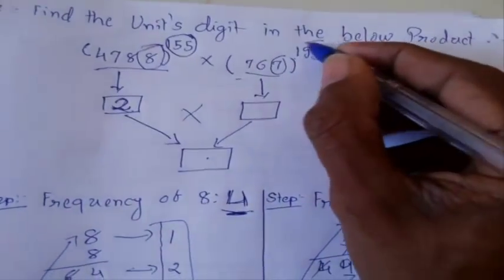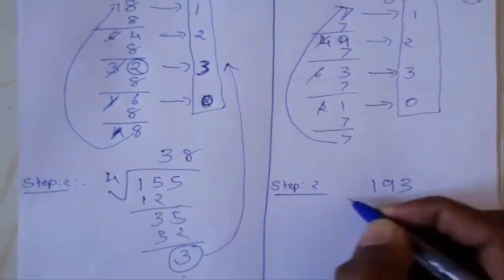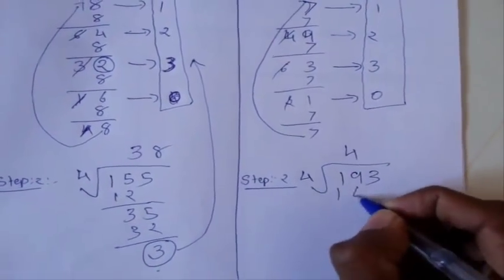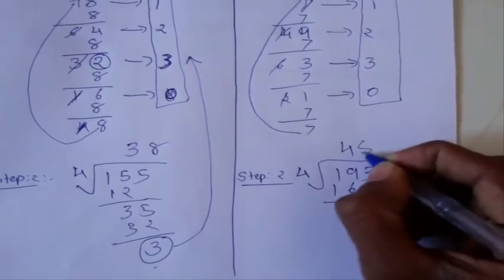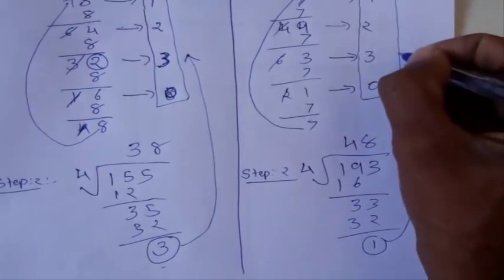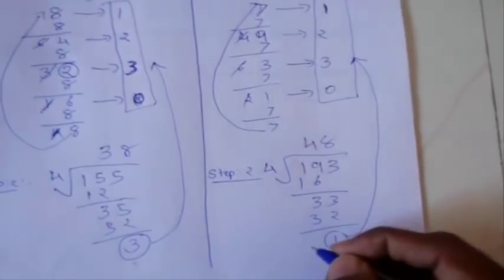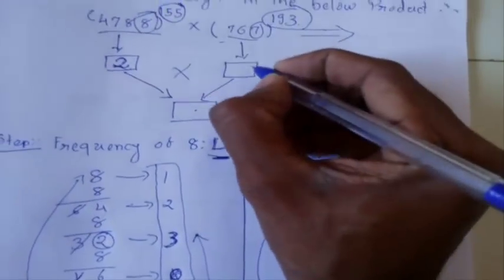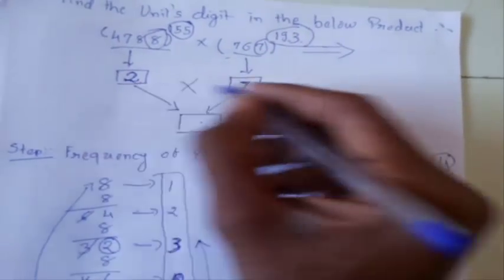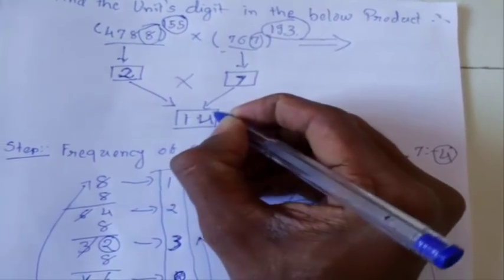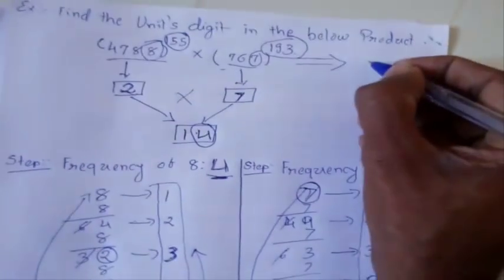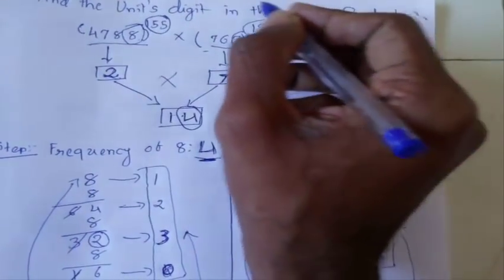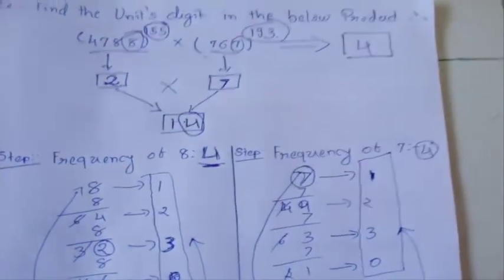We divide 193 by 4: 4 × 48 = 192, so the remainder is 1. Comparing this remainder with our frequency series, at rank 1 we have 7. So the units digit for this second exponential form is 7. Now multiply the two units digits together: 2 × 7 = 14, and the final units digit is 4. So 4 will be the units digit for this complicated multiplication.